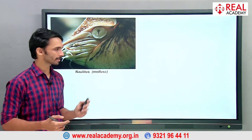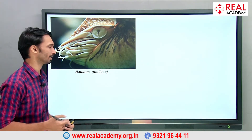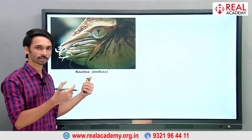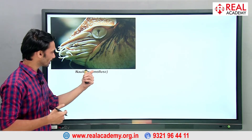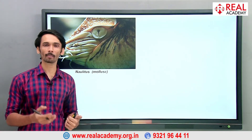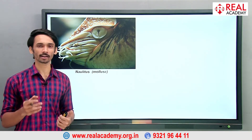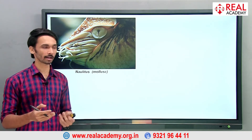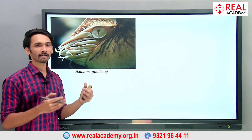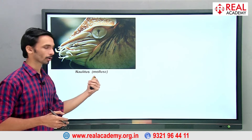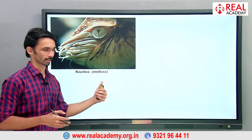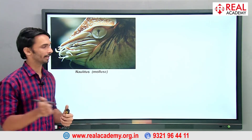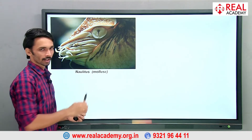We can see the first eye in the world basically with nautilus — an animal which is a mollusk. We know about phylum Mollusca: soft-bodied structures with a shell, like snails and octopuses. This animal had the first eye. You can see the pit eye here — in this eye, there is a black-colored hole in the middle.